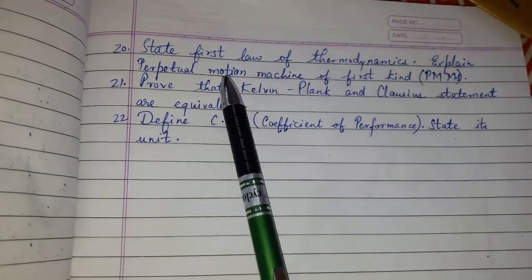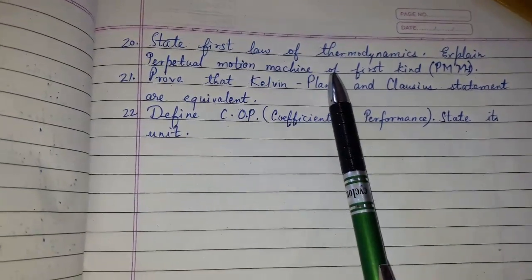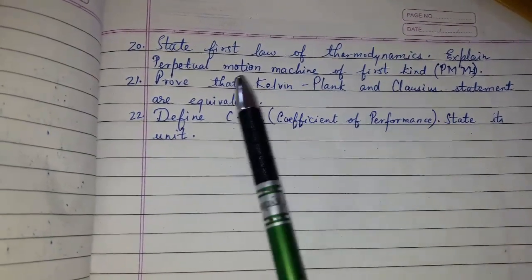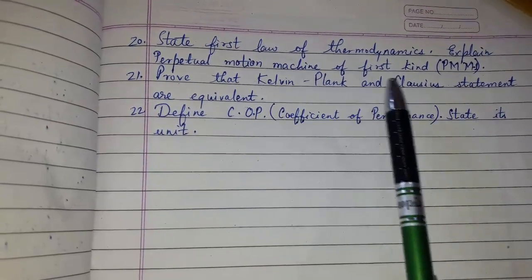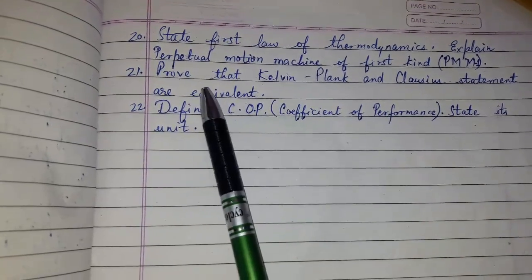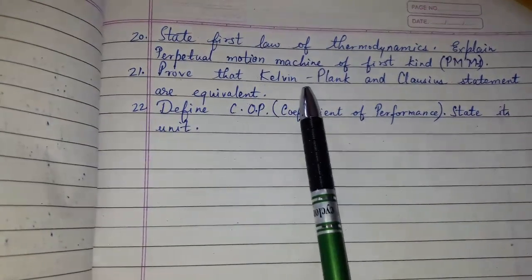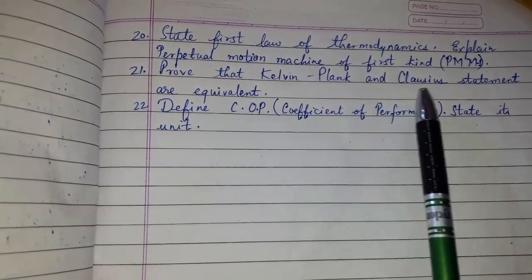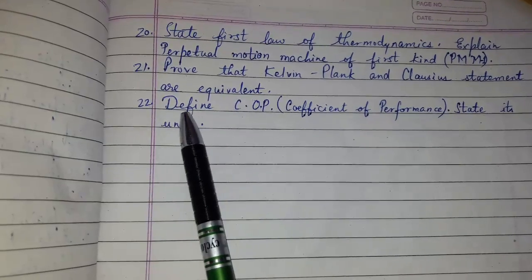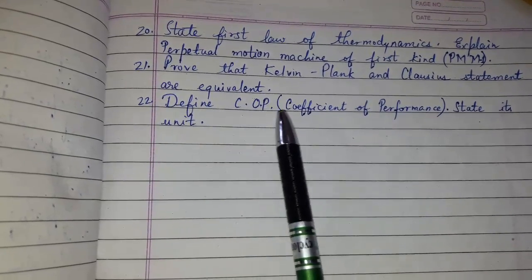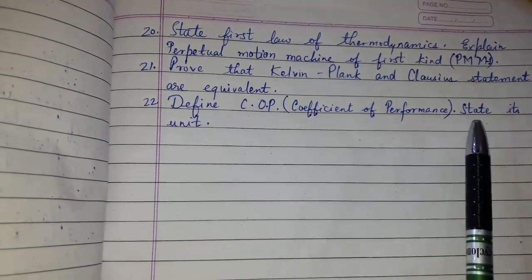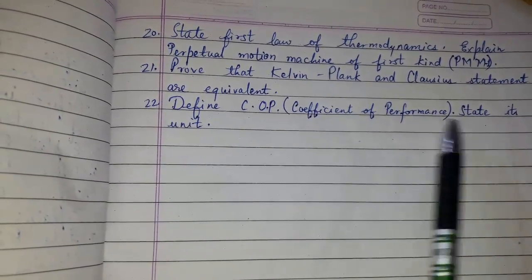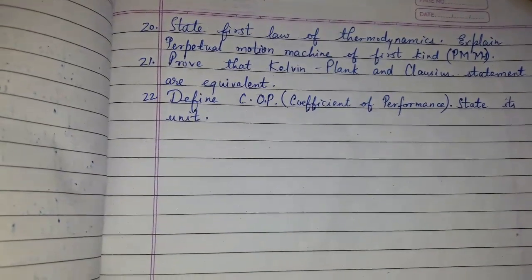State the first law of thermodynamics. Explain perpetual motion machine of the first kind. Prove that the Kelvin-Planck and Clausius statements are equivalent. Define COP, i.e., coefficient of performance, and state its unit.